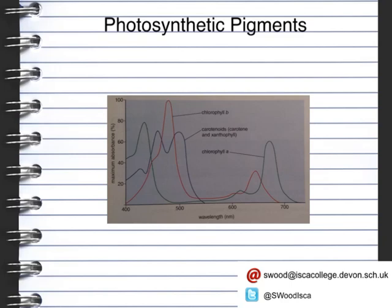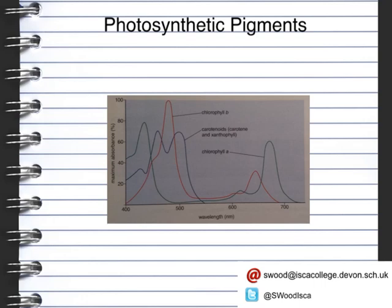Chlorophyll is a pigment that gives the leaves their green colour. However, chlorophyll is not just a pigment — it's actually a mixture of four different pigments. These pigments are chlorophyll A, chlorophyll B, as well as xanthophyll and carotene. These pigments absorb light at different frequencies, and you can see by the graph that they absorb light at the two opposite ends of the frequency spectrum.